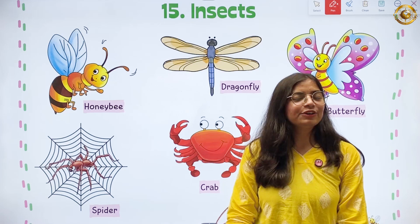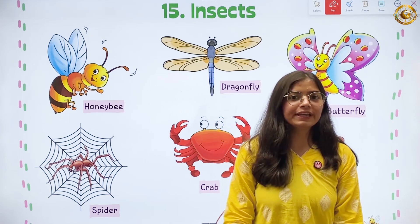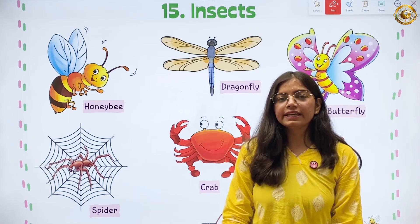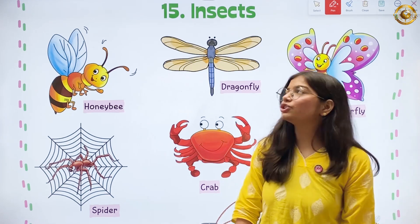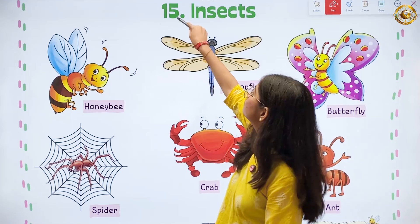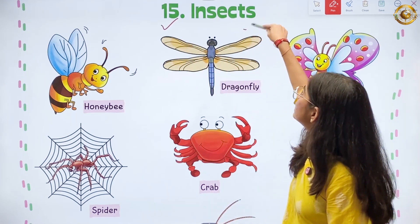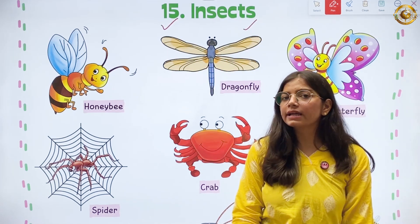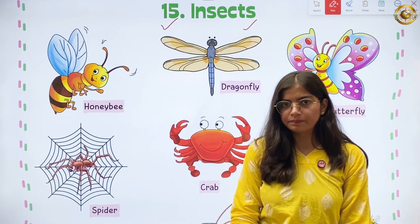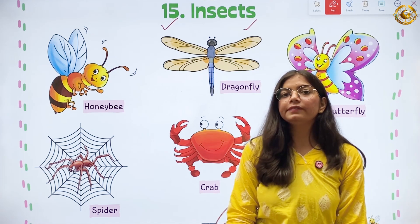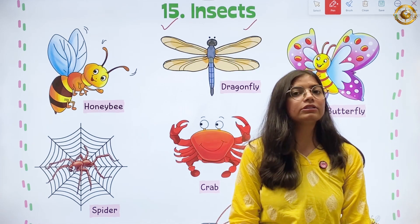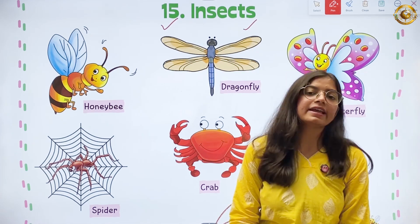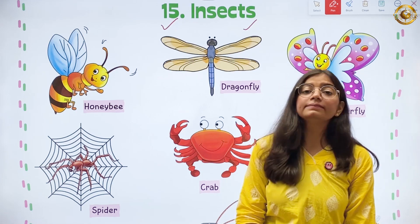Hello kids, I hope you are doing well. So kids, in today's class, we are going to do chapter 15, Insects, from the book Environmental Studies Beats. So kids, in this chapter, we will learn about the different names of insects. So let's begin.